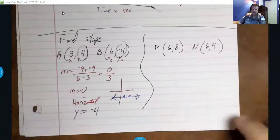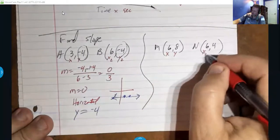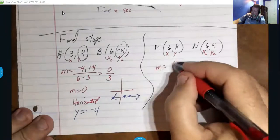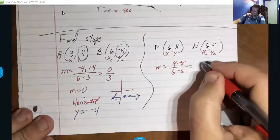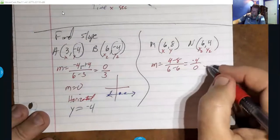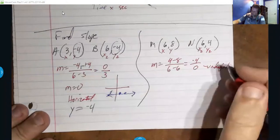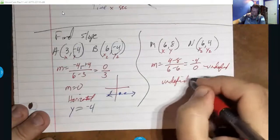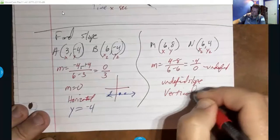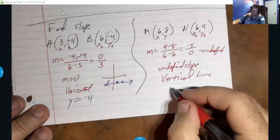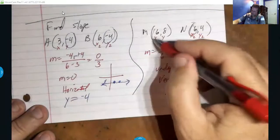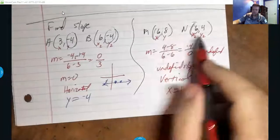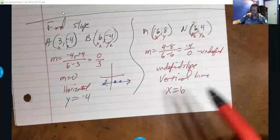Next example: x1 y1, x2 y2. Slope is 4 minus 8 over 6 minus 6, which is negative 4 over 0 — undefined. This has an undefined slope, meaning it's a vertical line. The equation is x equals 6. If you graph these two points you'd see they're right on top of each other — a vertical line. That's how we tell the difference between horizontal and vertical lines and their slopes.